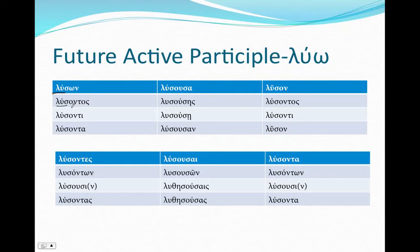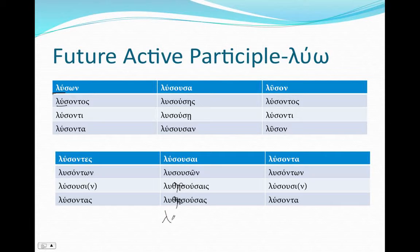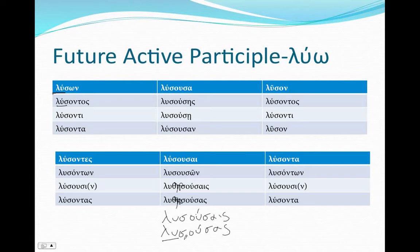In order to form the future active participle, all we're going to do is take that on, usa, on and attach it to the future stem. So it's very much like the present active participle, but with a sigma: lu-son, lu-sontos, lu-sonti, lu-sontes, lu-sonton, lu-susi, lu-sontes. The feminine forms are lu-susa, lu-susase, lu-suse, lu-susan, lu-susai, lu-suson — with corrections to lu-susais and lu-susas. Very easy to do: future stem plus the participle of ἄμι.